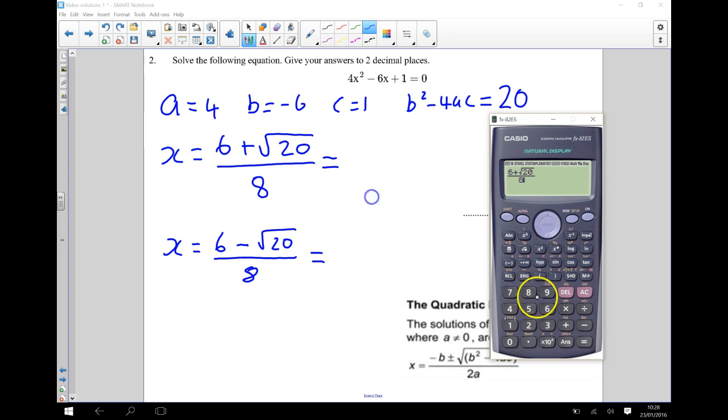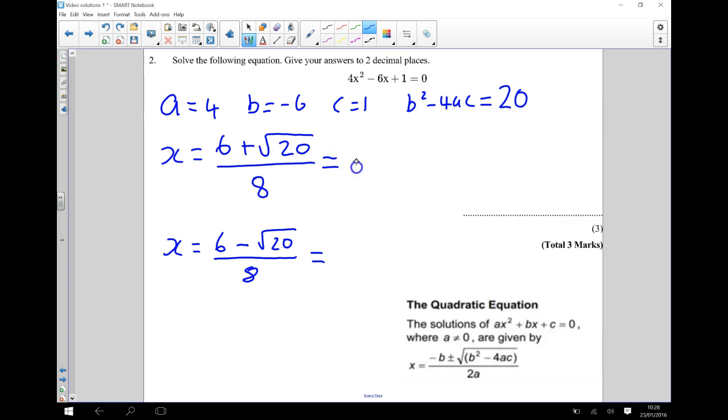And that gives me to 2 decimal places that's going to be 1.31, write that down, 1.31.